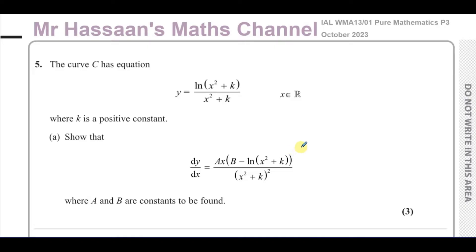Here we have a curve with the equation y equals ln(x² + k) over (x² + k), where x is an element of the real numbers — so this domain is all real numbers. It says where k is a positive constant.